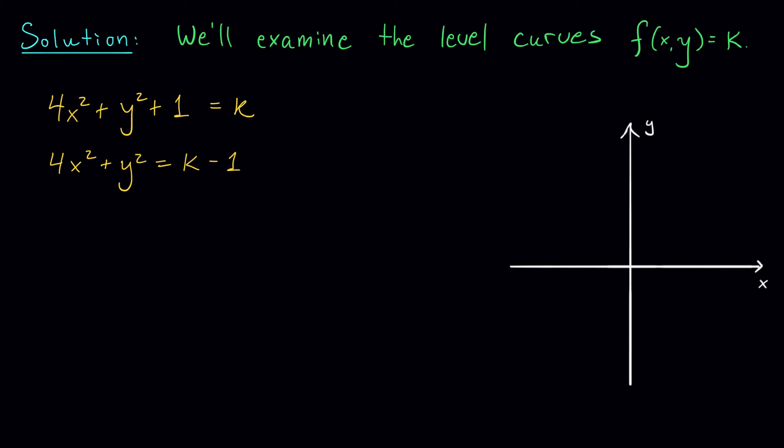Okay, this almost looks like the equation of a circle. Last time we got the equation of a circle, right? But this isn't quite a circle. It's a little bit stretched out in one direction. This is actually the equation of an ellipse.